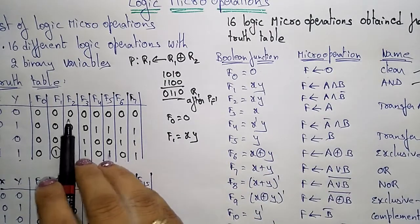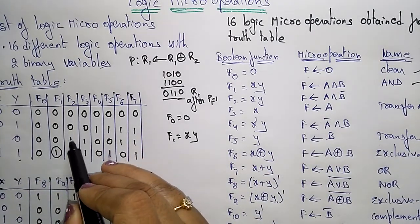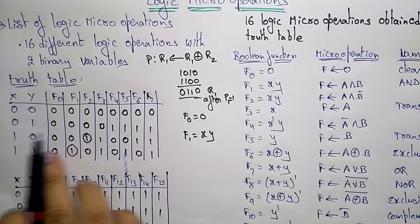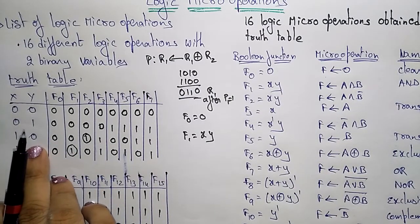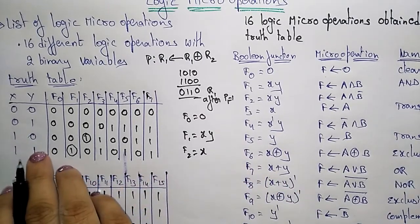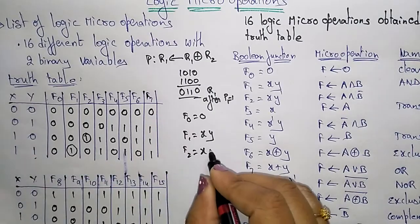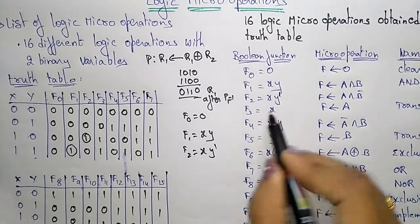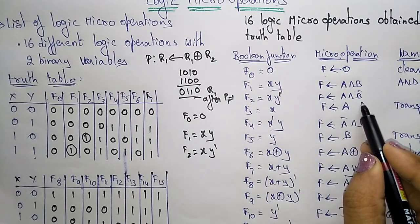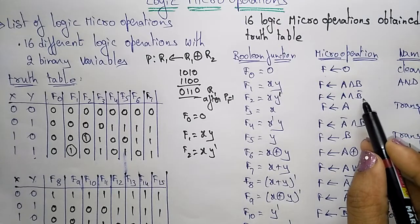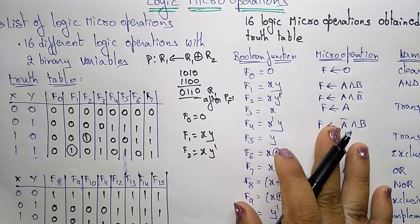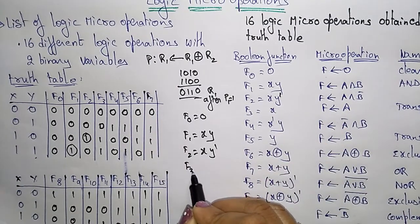For F2, the value 1 appears where X=1 and Y=0, so F2 = X AND Y' (X AND NOT Y). This corresponds to A AND NOT B, where B is complemented. This is how we derive each boolean function by examining where the 1 bits appear in the truth table.